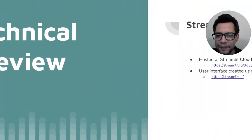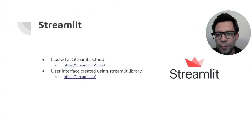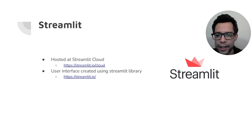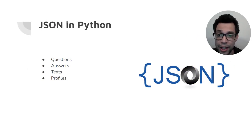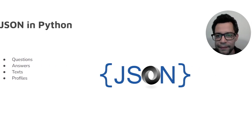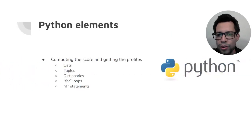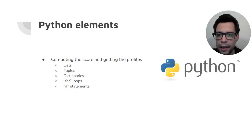Let's check what's inside. The Financial Behavior Test is hosted at Streamlit Cloud and was created using the Streamlit library for the user interface. The questions, answers, and texts are all loaded from a JSON file using a JSON library in Python. The logic of computing the score and getting the user profile was created in Python using lists, dictionaries, tuples, for loops, and if conditional statements.